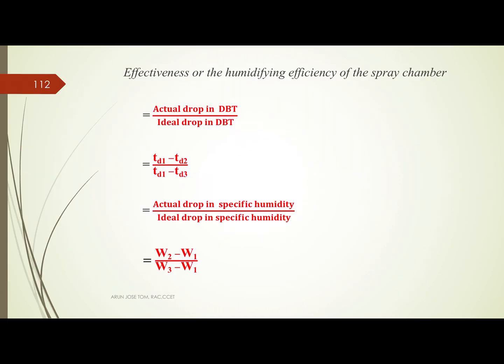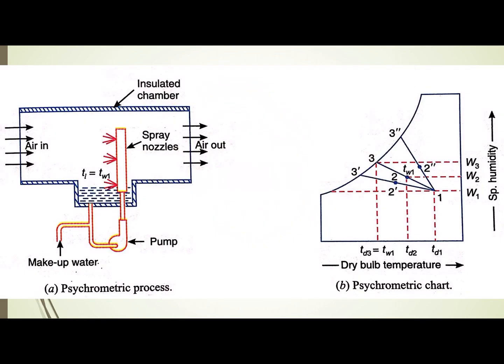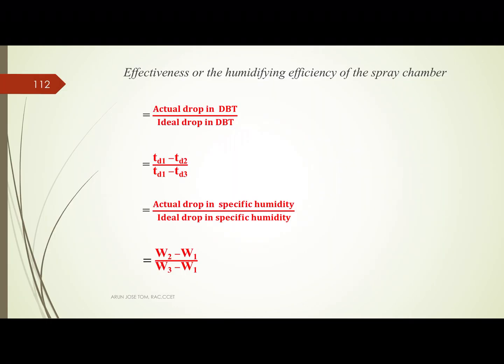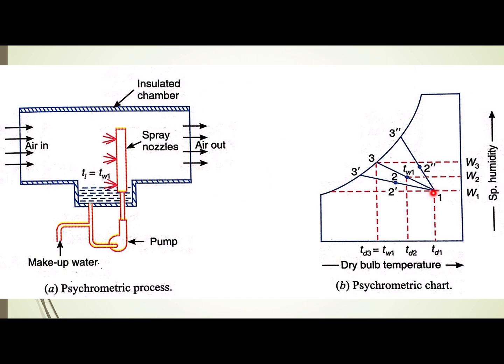The effectiveness or humidifying efficiency of the spray chamber is defined as the actual drop in dry bulb temperature divided by the ideal drop. That is (Td1 - Td2) divided by (Td1 - Td3), where condition 3 represents the saturated air condition.